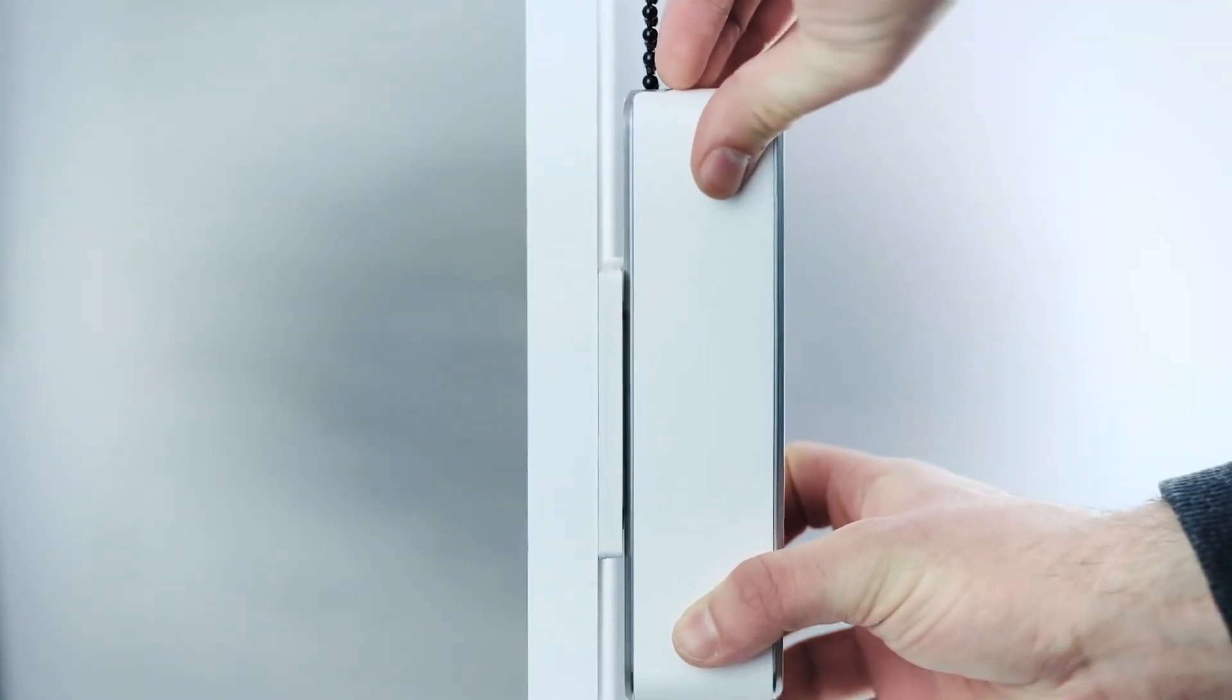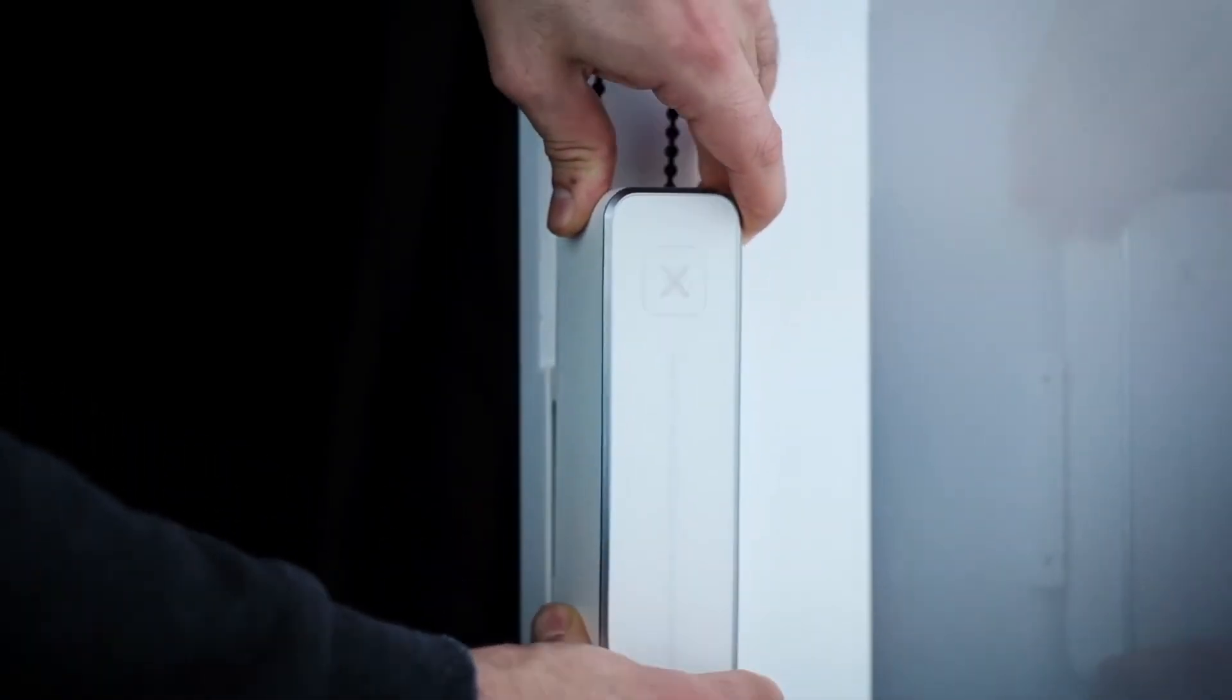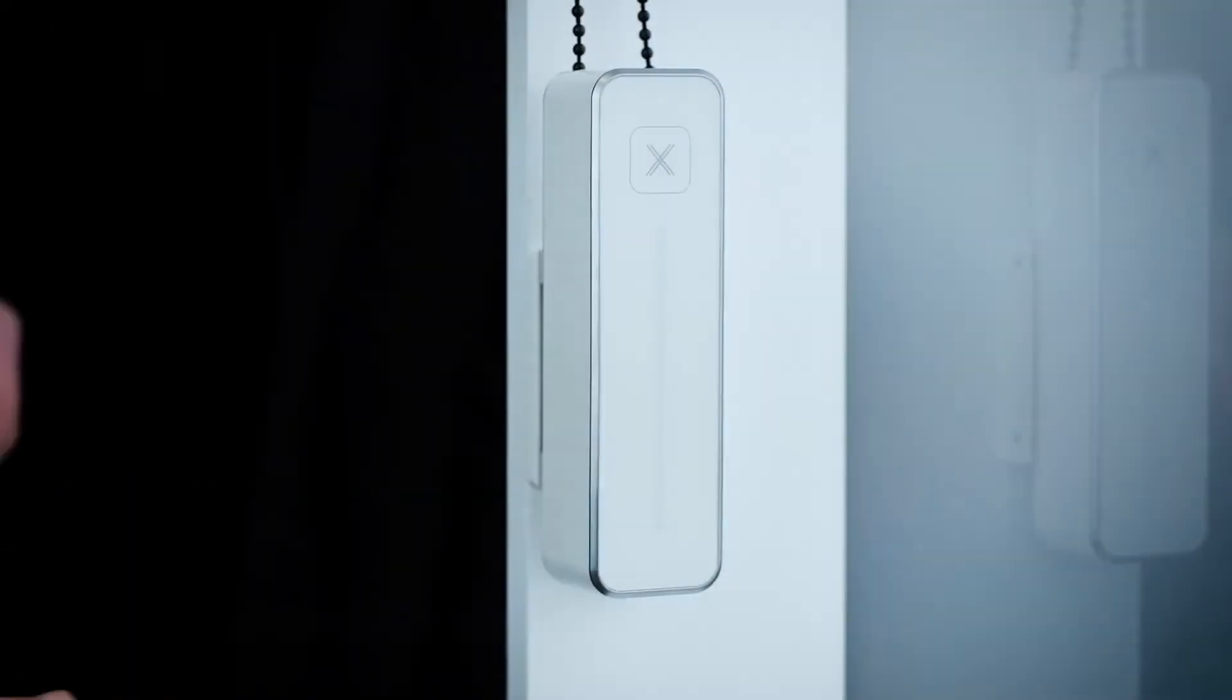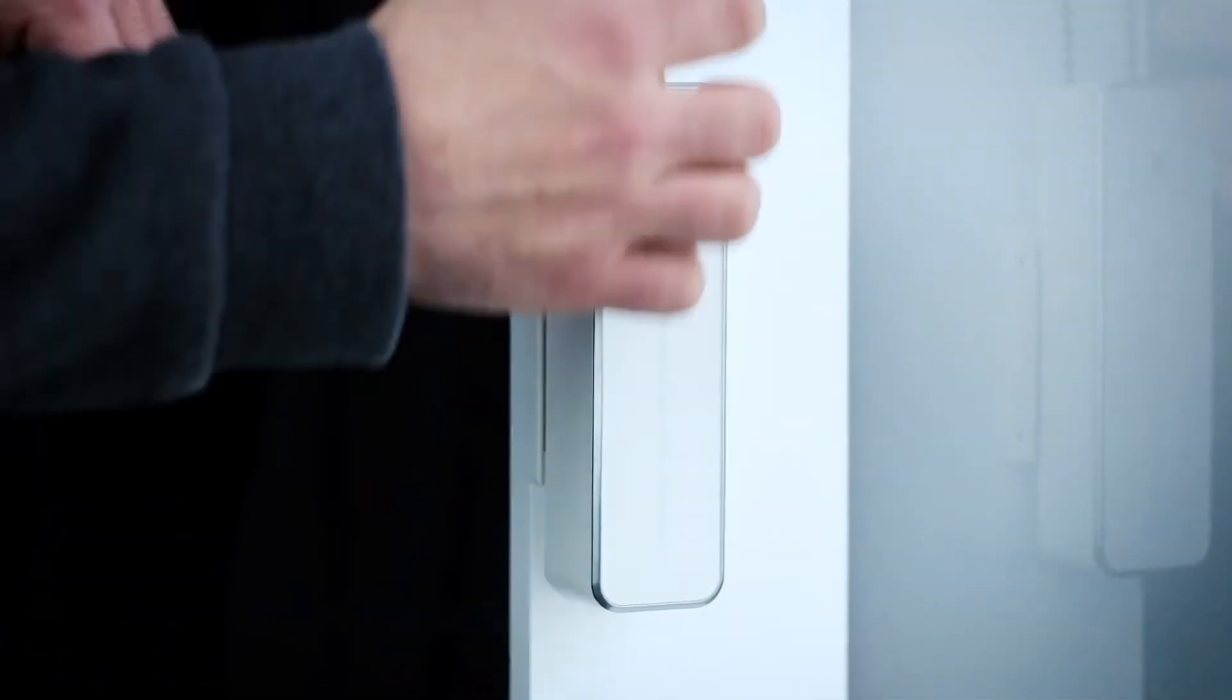Push gear down onto the bracket. You will hear several audible clicks. Make sure the gear has been firmly installed on both the left and right sides.